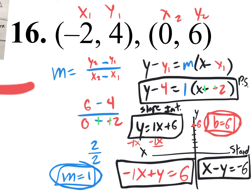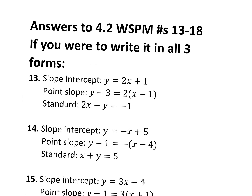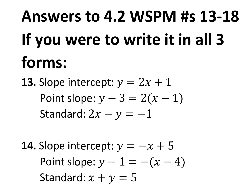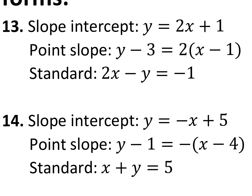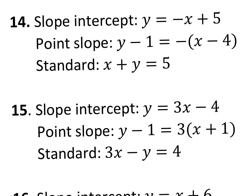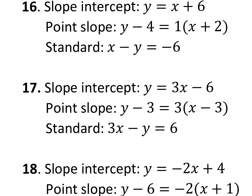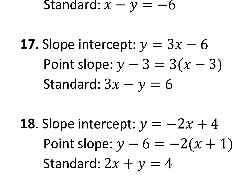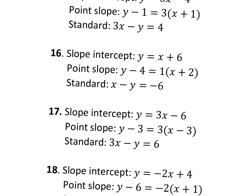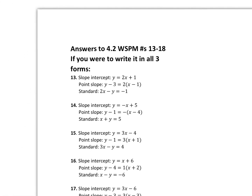On Google Classroom, you'll be able to click on the PDF file that has the solutions for problems 13 through 18. You'll see all three different forms — slope-intercept form, point-slope form, and standard form — for numbers 13, 14, 15, 16, 17, and 18. Of course, if you don't have access, you could just pause this video and get those answers. Let's practice — all this stuff will be on the quiz this Friday.